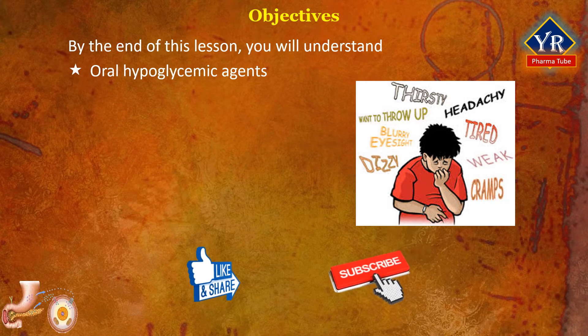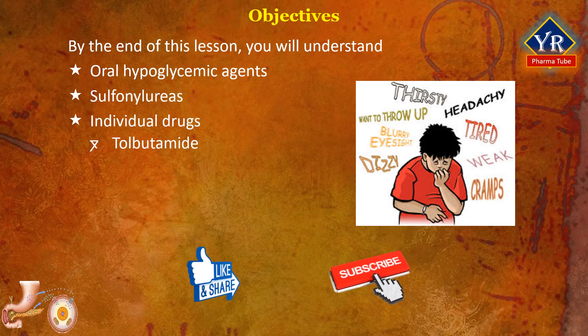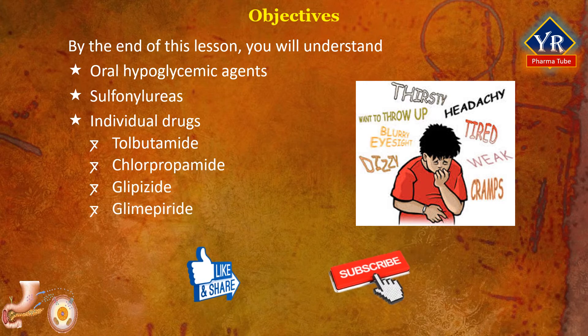Also, you will learn the sulfonylureas, which are a class of oral hypoglycemic agents, and the individual drugs such as tolbutamide, chlorpropamide, glipizide, and glimepiride.